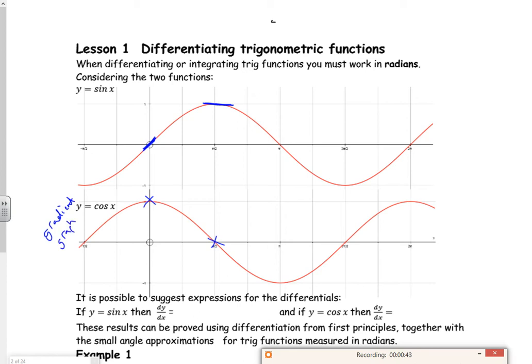Then if I look here at pi, it's minus one. So the gradient there is minus one. If you look at three pi over two, it's another stationary point, so it's got a value of zero, the gradient. And here the gradient's one. If I sketch it through, you can see that the sine graph, if you differentiate it...